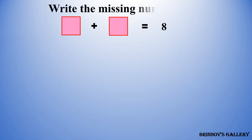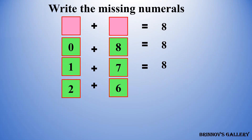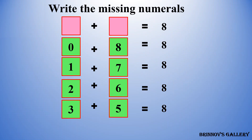Write the missing numerals. Three plus five is equal to eight, or four plus four is equal to eight. We can choose any option from these possibilities to fill the missing numerals.